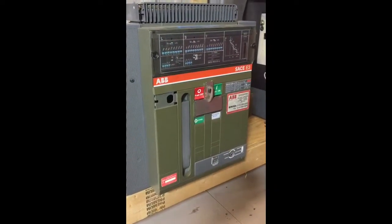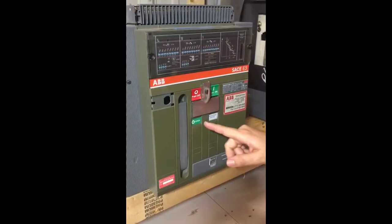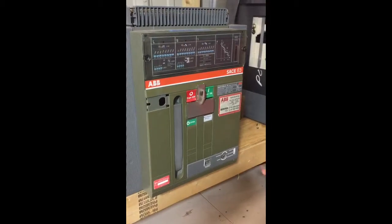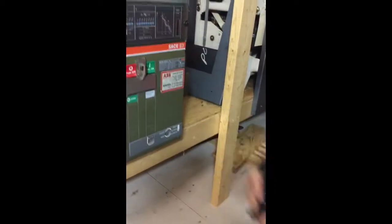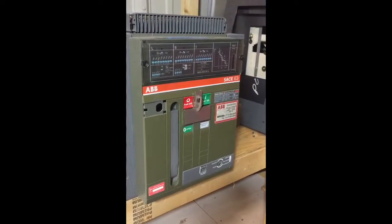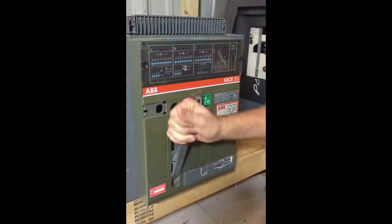So here we have an ABB E-breaker and it is currently in the open position. We're going to close it remotely using the Chicken Switch SACE-1 actuator. But first I need to charge the spring, so I'll use a charging handle.